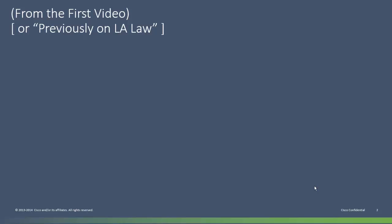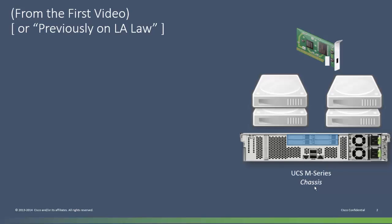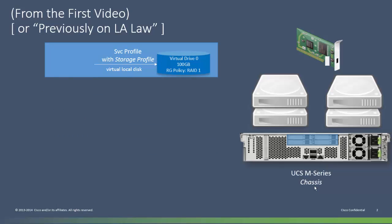A quick review of what we've got here. The chassis has solid state drives and a RAID controller that are a shared resource for all service profiles associated with a server in that particular chassis. A service profile not yet associated with any server has a disk specification for its virtual local storage, but can't actually have any storage allocated because we don't even know what chassis we're talking about yet. Once the RAID group gets created, remaining space is available for more virtual drives in the same chassis. They could be all different sizes and from all sorts of different service profiles.